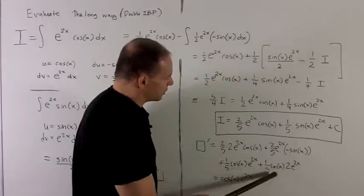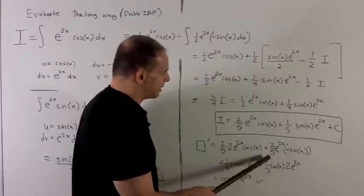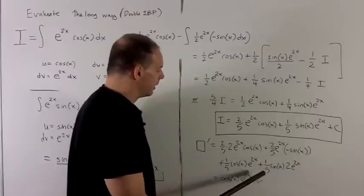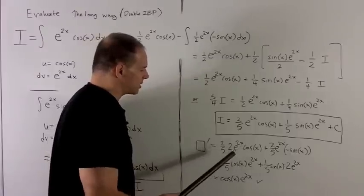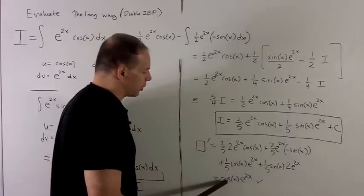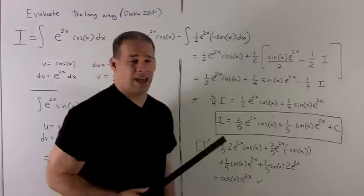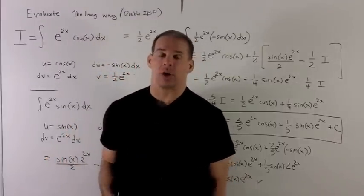And then we look at this. We see here the coefficients of 2 fifths. Here it's a minus 2 fifths, so these go away. And then I'm left with 4 fifths plus 1 fifth, cosine e to the 2x. That's going to give me just cosine x, e to the 2x. And we notice that matches up with my original integrand.